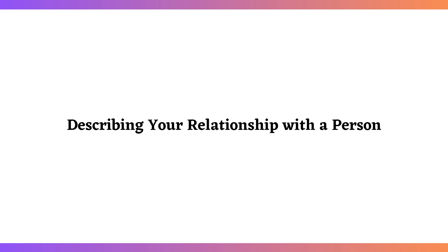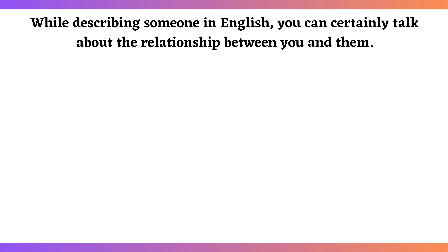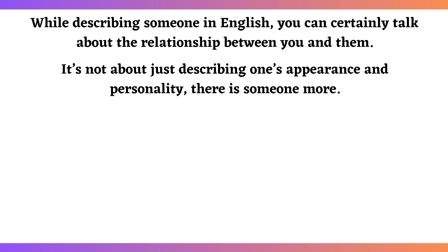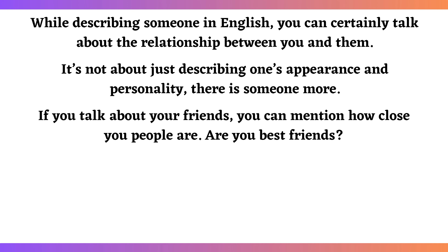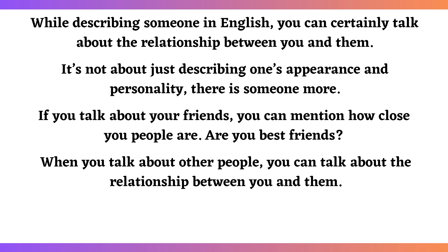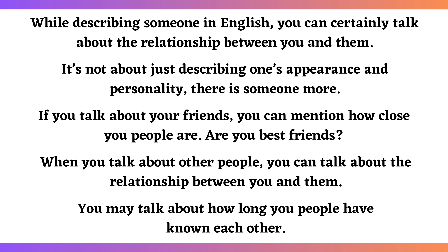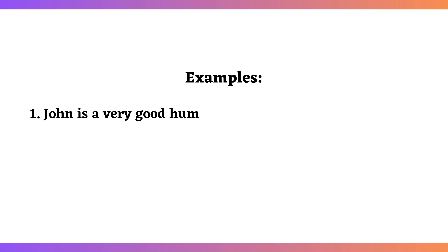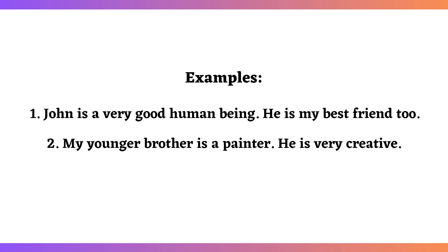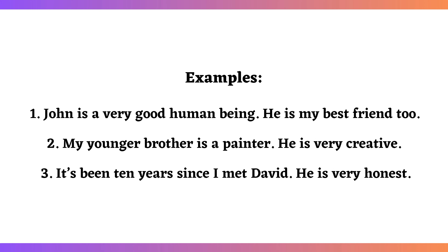Describing your relationship with a person: while describing someone in English, you can certainly talk about the relationship between you and them. It's not just about describing appearance and personality — there is something more. You can mention how close you are, whether you are best friends, and how long you have known each other. Examples: John is a very good human being. He is my best friend. My younger brother is a painter — he is very creative. It's been 10 years since I met David. He is very honest.